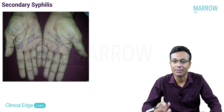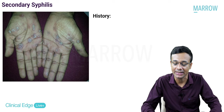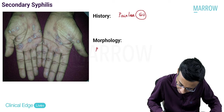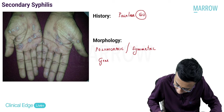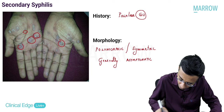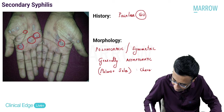The next important differential diagnosis for a papulosquamous eruption is secondary syphilis. When secondary syphilis is mentioned, there should have been primary syphilis - ask for a painless genital ulcer. The morphology shows a polymorphic symmetric rash, generally asymptomatic. Very characteristic involvement in the exam is the palms and soles - almost every patient of secondary syphilis will have involvement of the palms and soles, which is very characteristic.